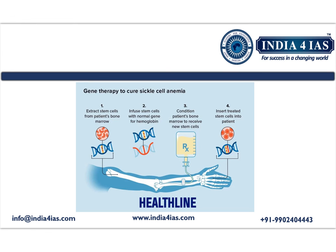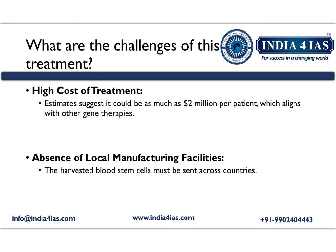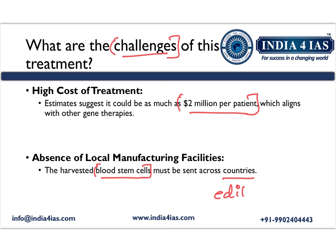The following figure summarizes the CasGavi gene therapy discussed so far. Coming to the challenges associated with this therapy — the cost of treatment may be as high as $2 million per patient, making the treatment unaffordable for poor people. Additionally, the absence of local manufacturing facilities means harvested blood stem cells must be transported to foreign countries where the editing of stem cells happens.